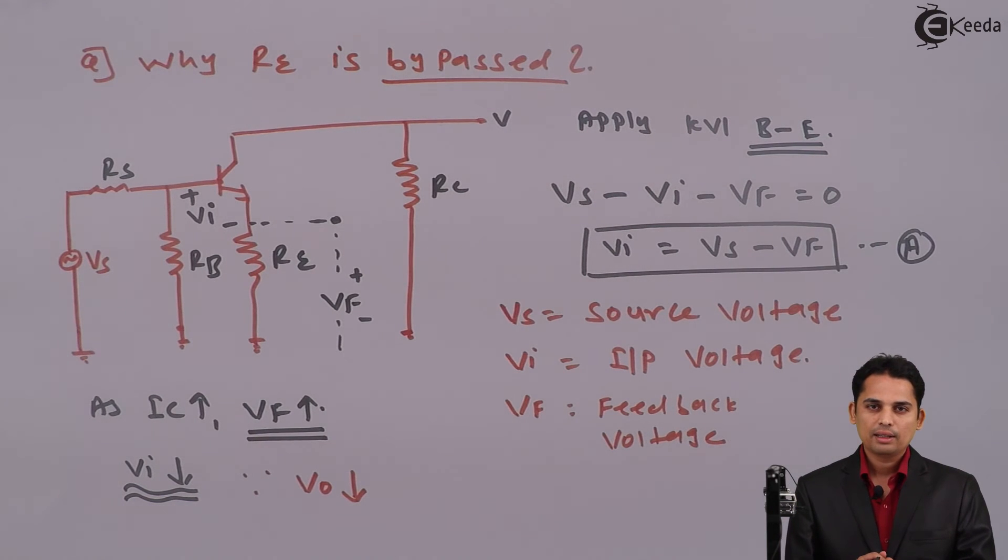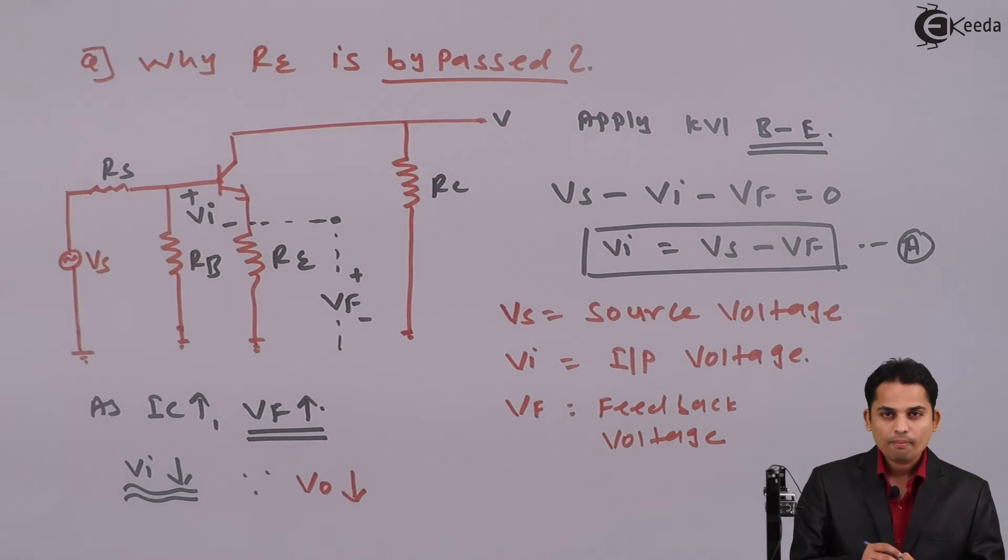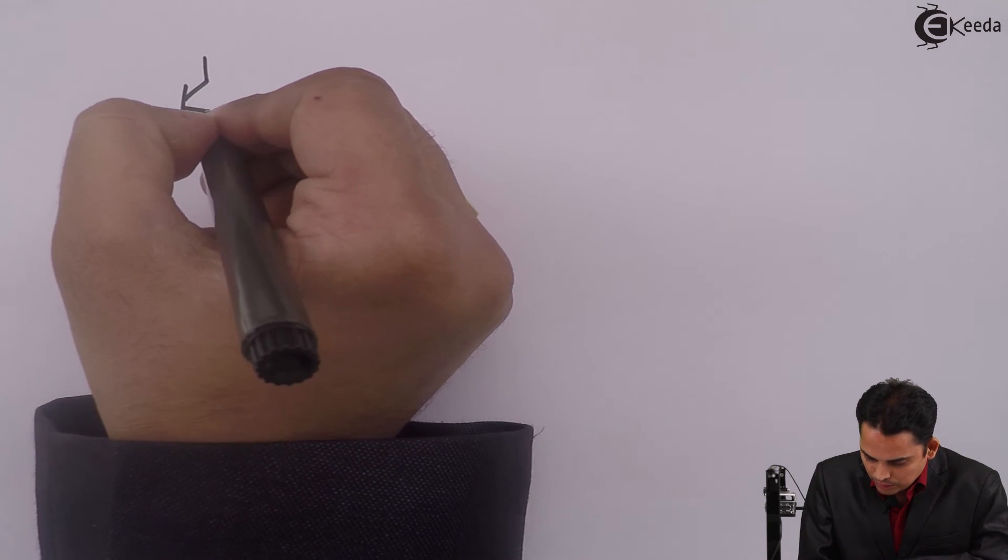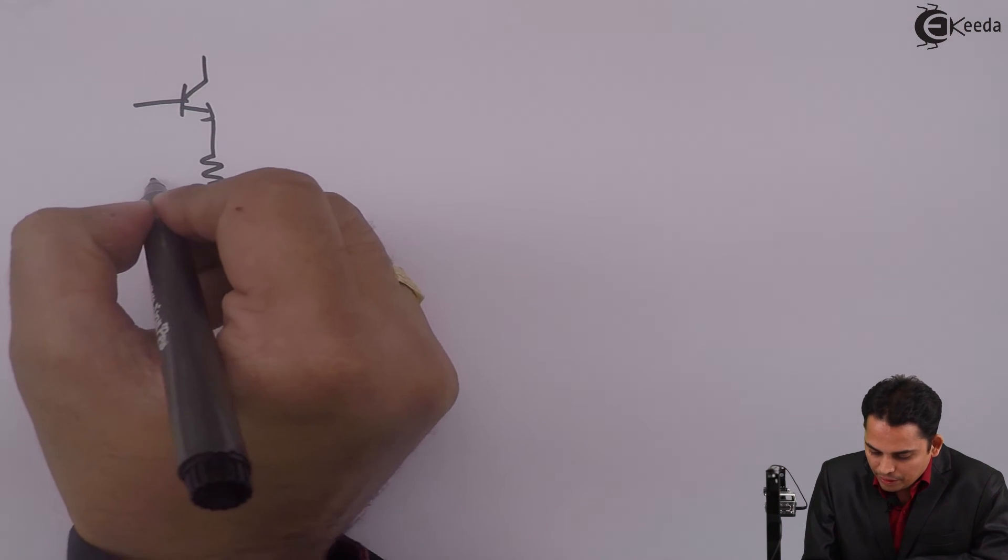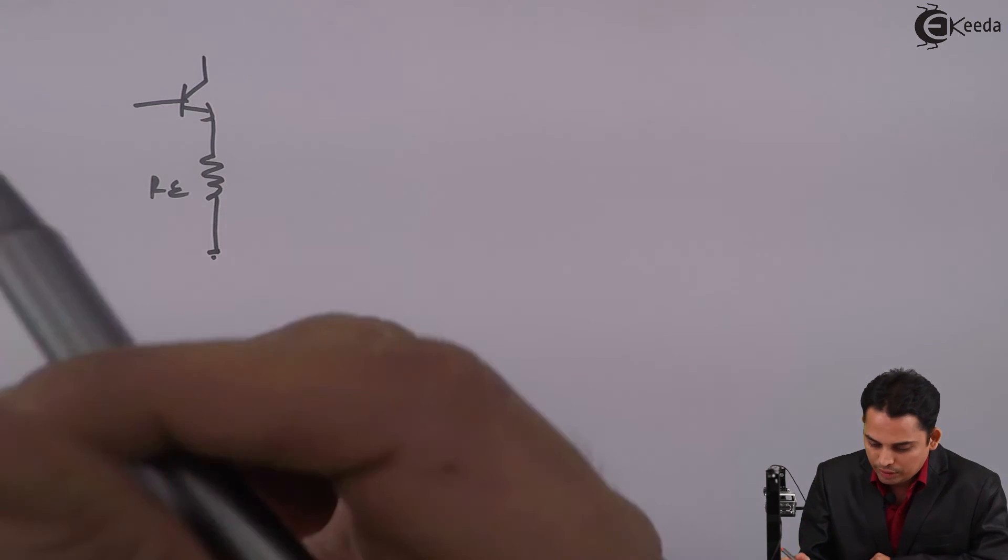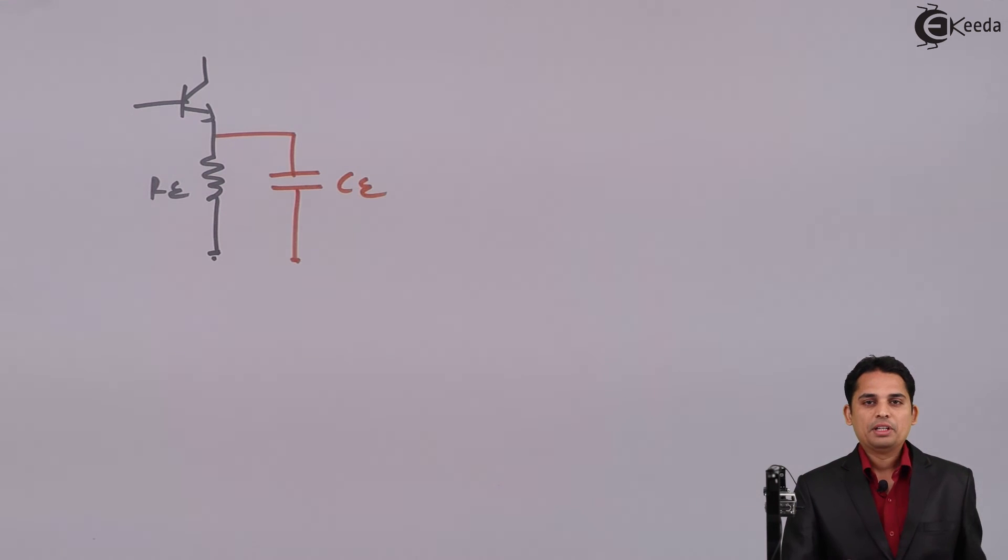For that, we can do only one thing. We can add a capacitor in front of RE. What will happen because of that? Let us see. What I am saying is, suppose this is your RE or emitter resistor. Let us add a capacitor across it.